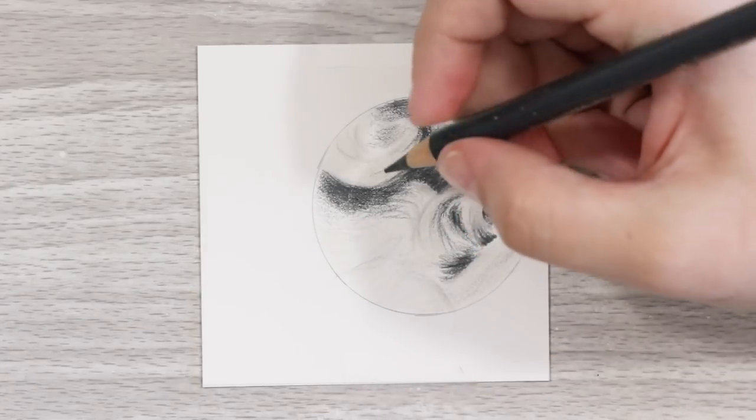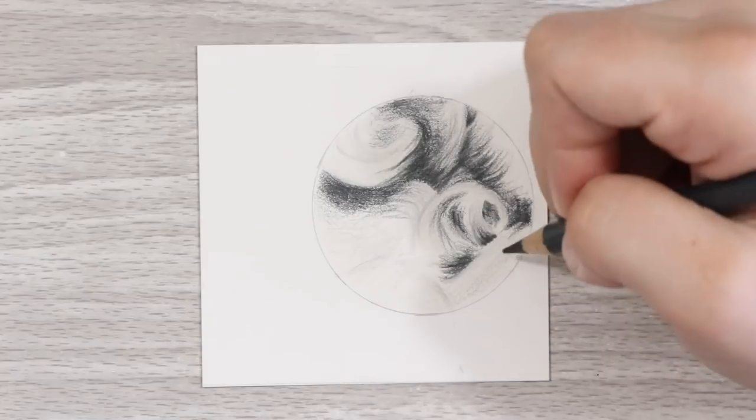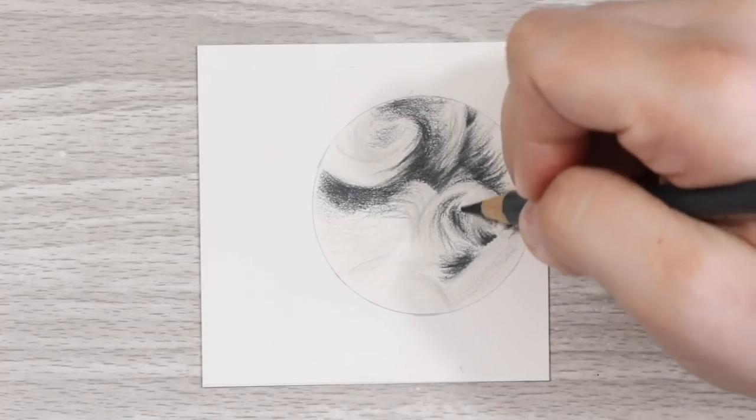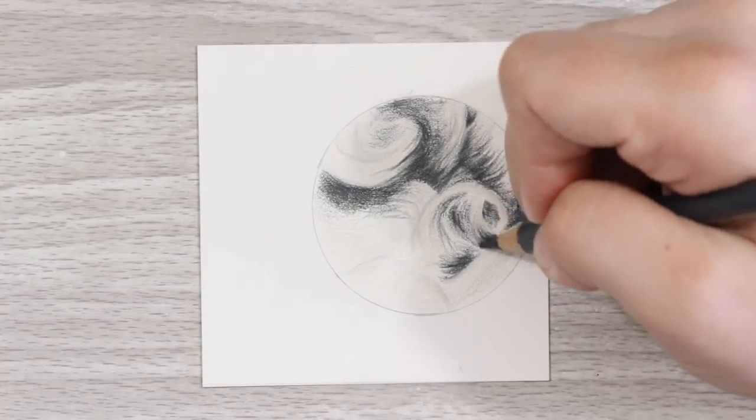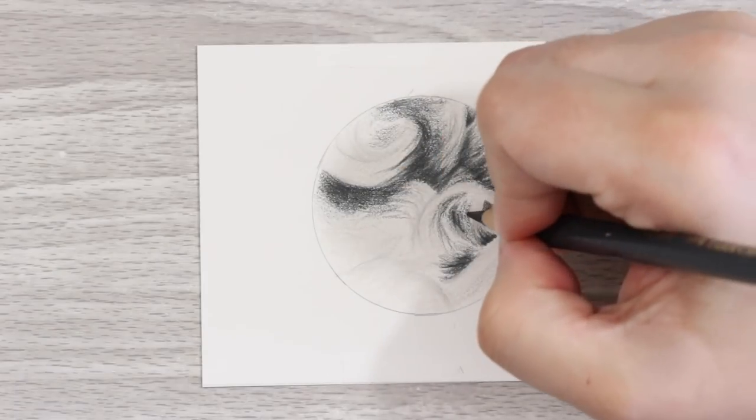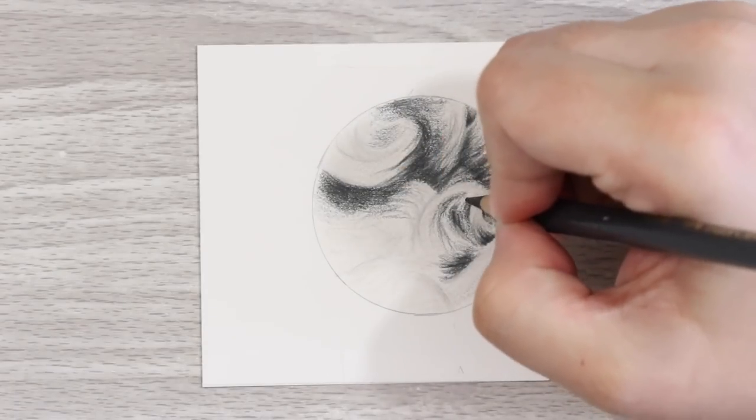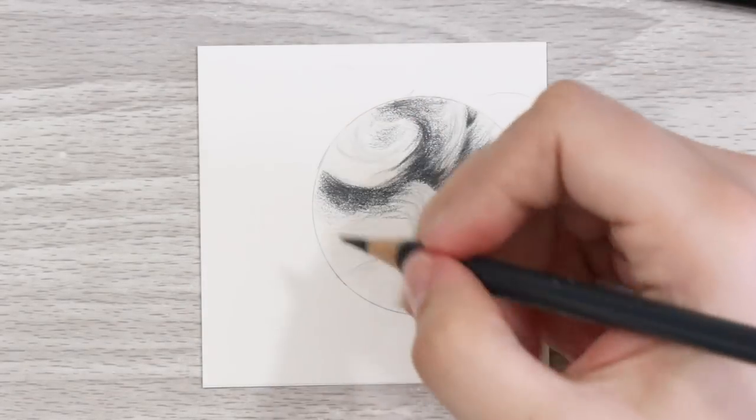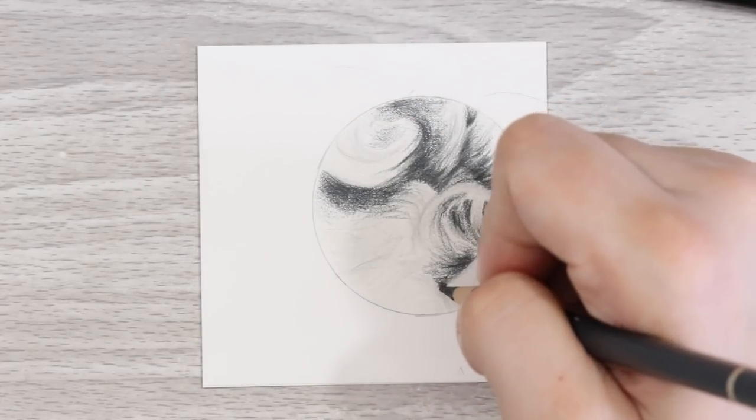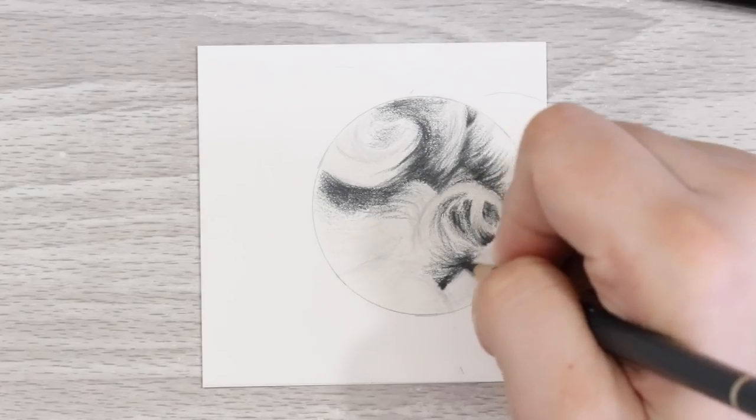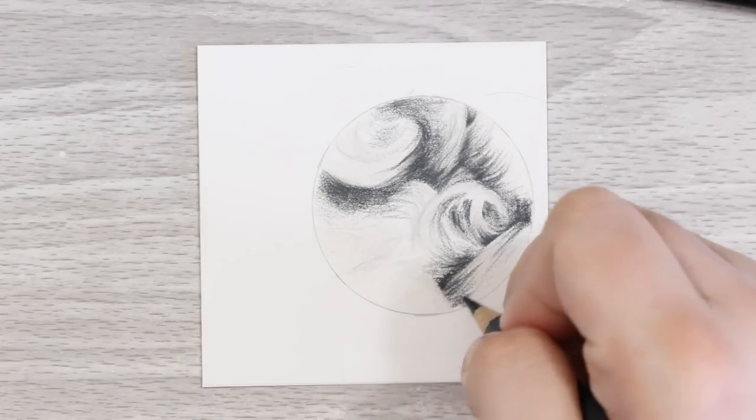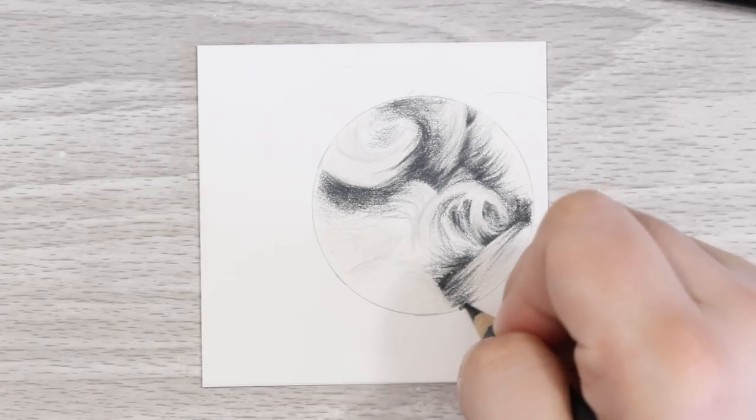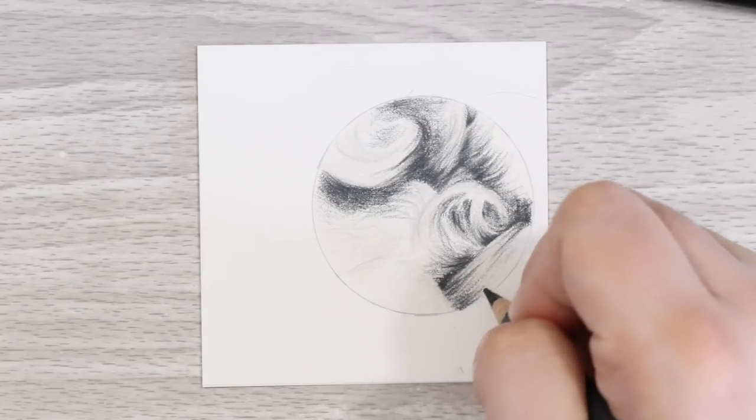Start off with the darkest parts which are generally the outer edges of the shape, the parts where other fur overlaps or intersects, or any areas where the fur is close to the skin. You want to follow the curvature of the shape and the fur. Layer up a couple of times to get a nice dark tone and then start to blend the tone out into the light areas by lifting the pressure off the pencil. Only work a little way into the light tones at this point though.